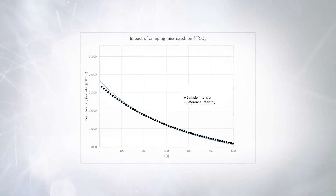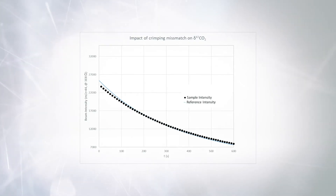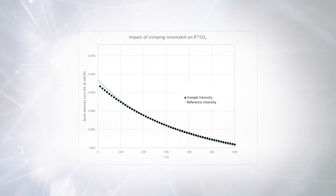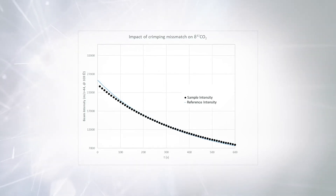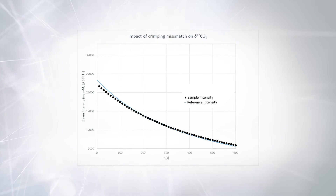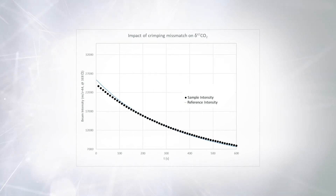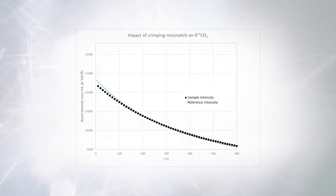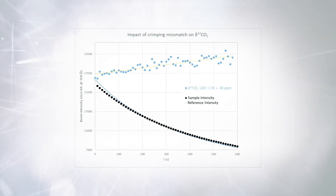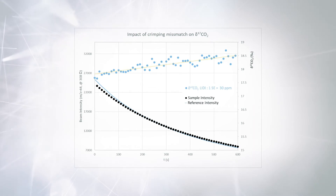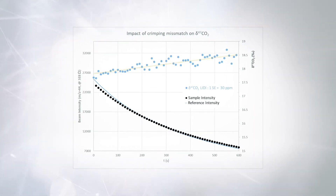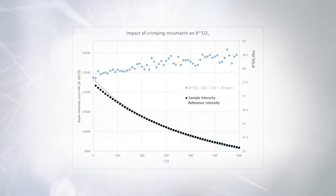With the previous software solution, the intensity decays of sample and reference signals show a mismatch due to non-perfect capillary crimping and the pressure adjust, as shown in the figure. This causes a visible trend in the resulting delta 47 CO2 data depicted in blue.